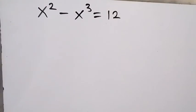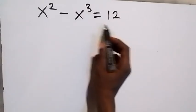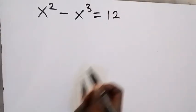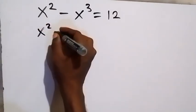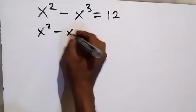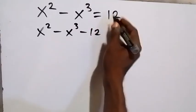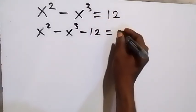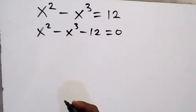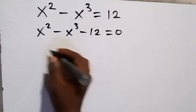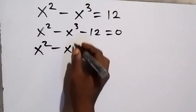Hello, how to solve this problem: x squared minus x cubed equals 12. From here, let's take 12 to this side, so this becomes x squared minus x cubed minus 12 equals to zero. We can also split this — we have x squared minus x cubed, and we split minus 12.